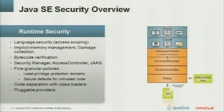In the graphic, you see a class calling another class and calling into trusted code. The code is constrained by the security manager. By comparing what is on the stack and what is allowed, access to the resource is either granted or denied.